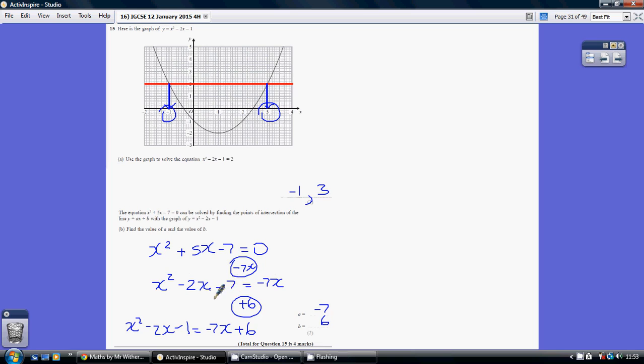Now we don't want it to be minus 7, we want it to be minus 1, so we need to add 6 to each side. Then our left hand side is as required, x squared minus 2x minus 1, but our right hand side is minus 7x plus 6. So a is minus 7 and b is 6.